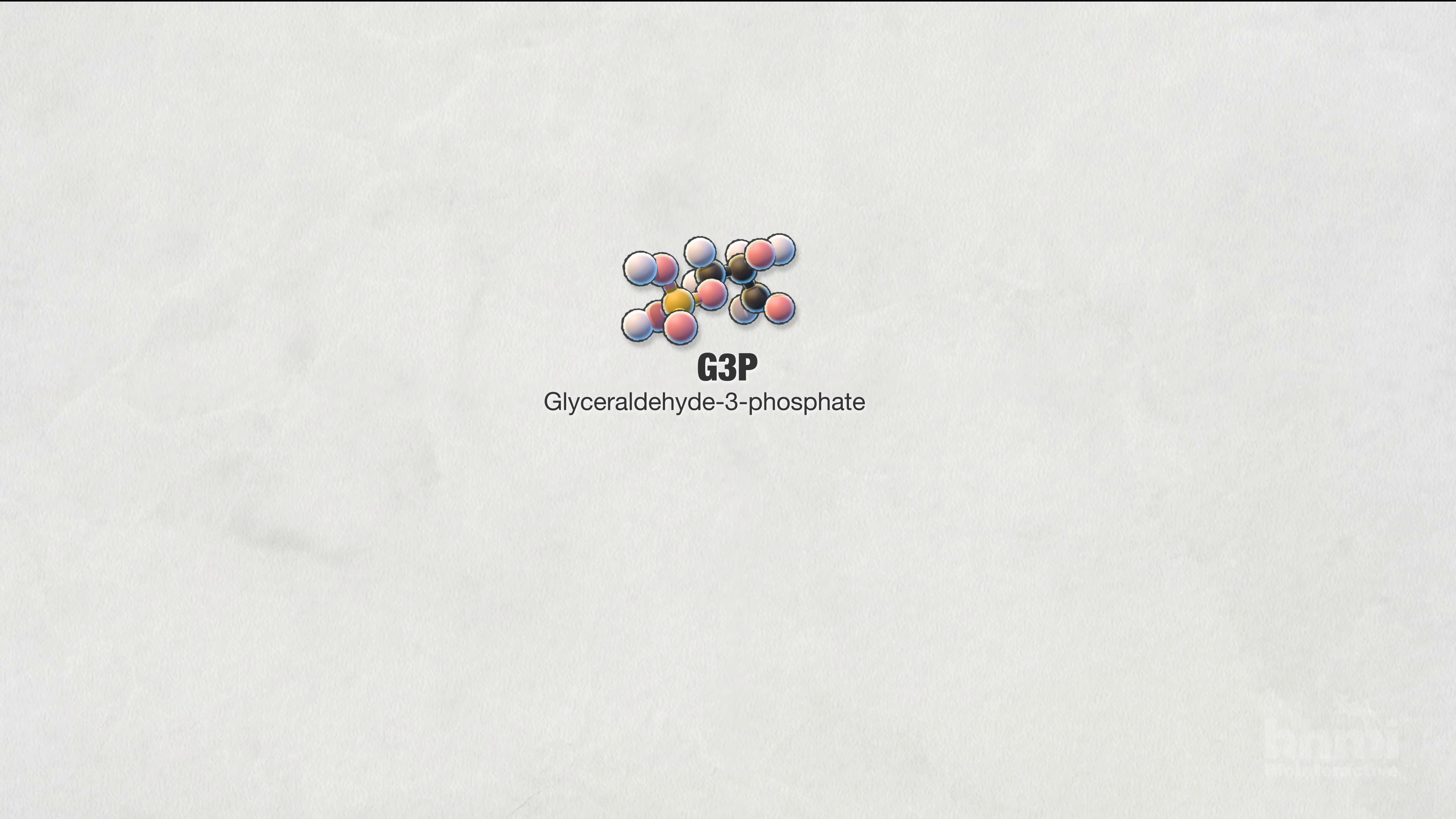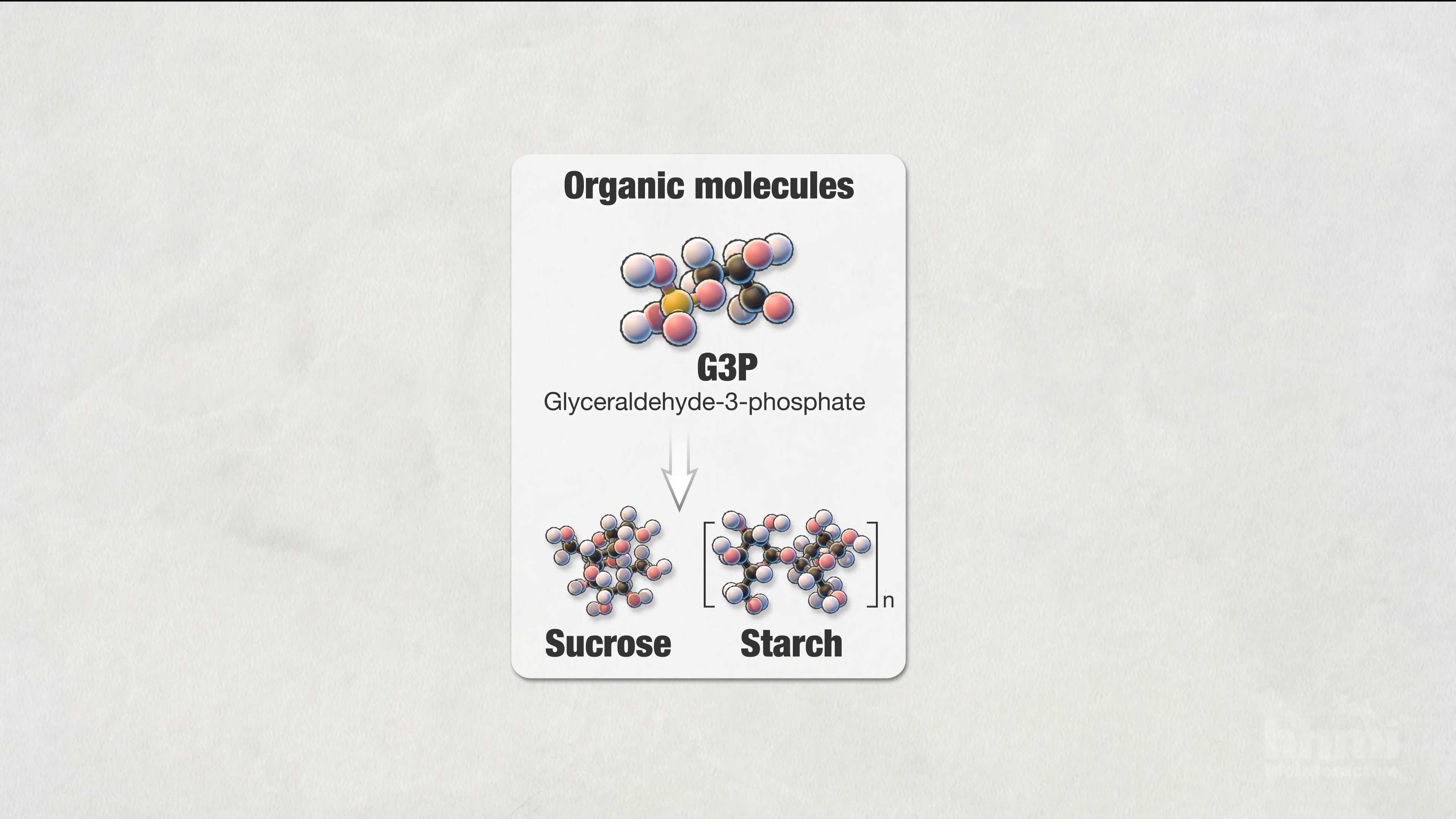G3P, the net product from the Calvin cycle, can be used to generate other organic molecules such as sucrose or starch.